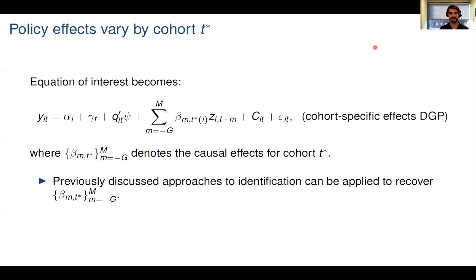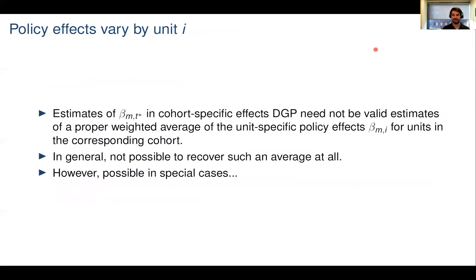In a few slides, I will show in simulations that this approach works very well. Alternatively, causal effects may vary by unit i. In that case, estimating a regression corresponding to the cohort-specific effects equation may not give a proper weighted average of the unit-specific policy effects for units in that cohort. In general, recovering a proper weighted average is only possible in special cases. Let me give some examples of such special cases next.